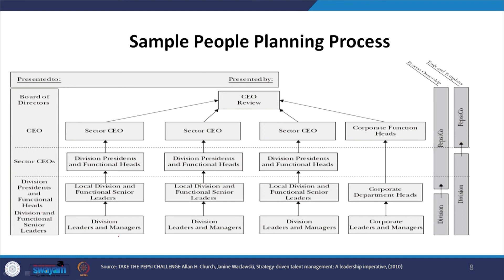Those at the front manager level — their division should be present. For example, if it is finance then the financial division, if marketing then the marketing division. Similarly, the same will be there in the case of division leaders in different functions — for example, operations, IT, and so on. Sector CEO may be applicable for HR, and therefore division presidents and functional heads are there. Local divisions and division leaders and managers are there.